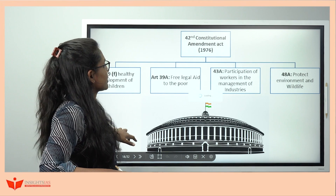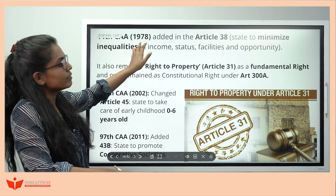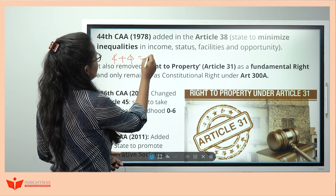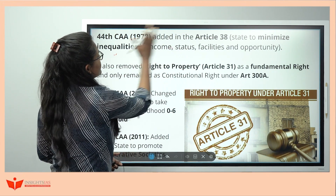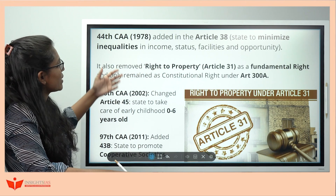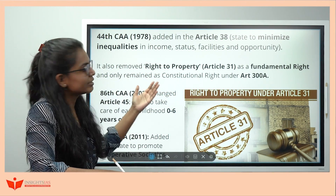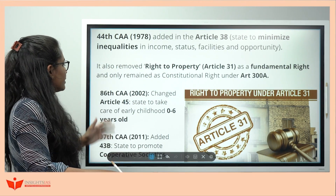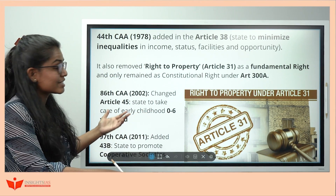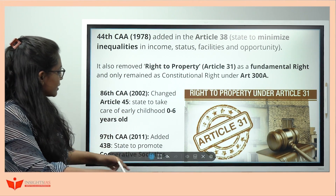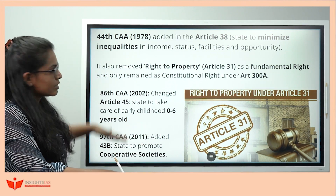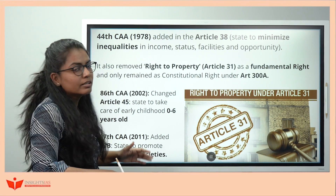The 44th Constitutional Amendment Act came in 1978 — remember: 4+4=8, so 1978. Through it, Article 38 — minimize inequalities — was added. It also removed Right to Property from Article 31 and added it as Article 300A. The 86th CA brought Article 45 — early childhood care from zero to six years — that's why we have Anganwadis. The 97th CA in 2011 added cooperative societies.